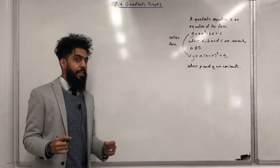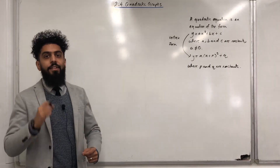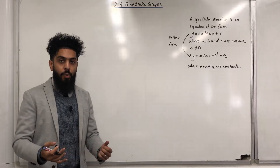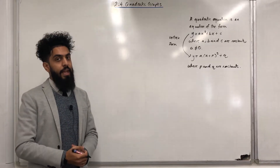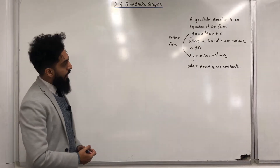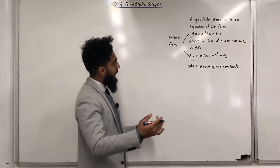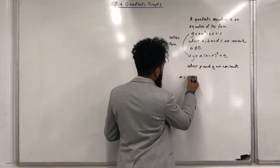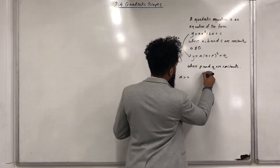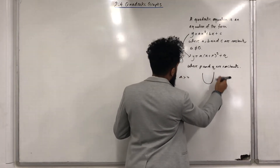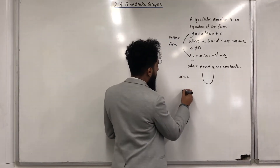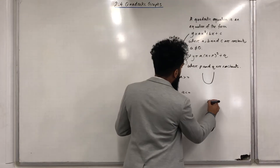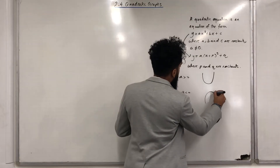The shape of the quadratic graph depends on the coefficient of x², which is the a-value. If our a-value is greater than 0, we have a U-shaped graph. If our a-value is less than 0, we have an upside-down U-shape.